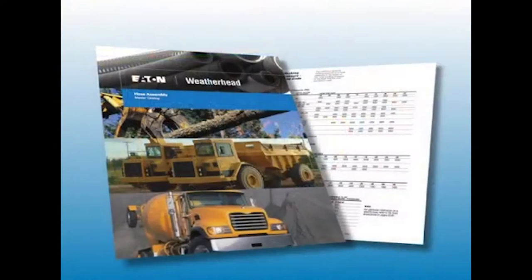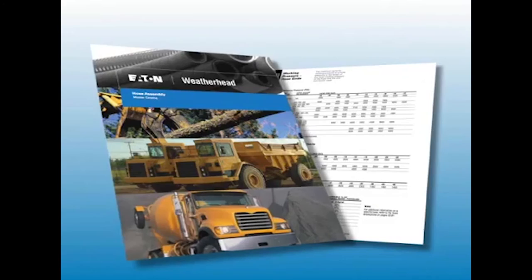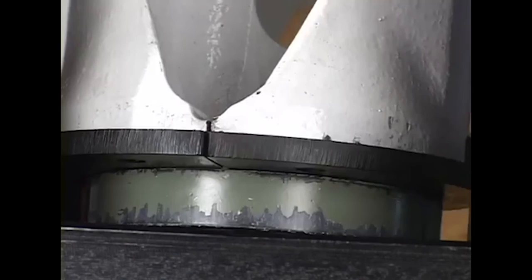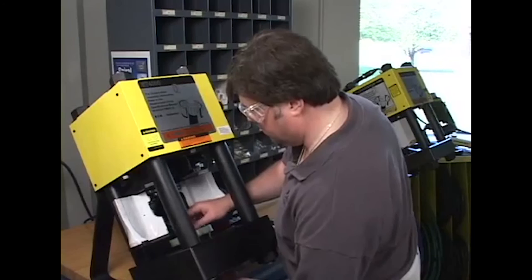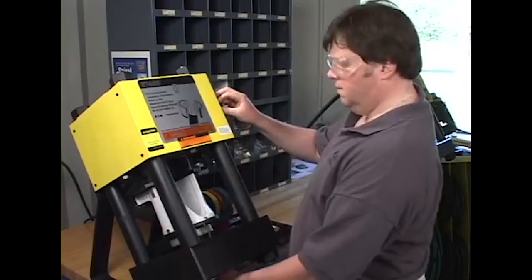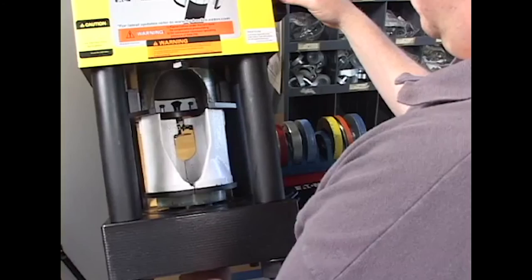If there is a problem or you have any questions, consult the crimping procedures found in the equipment section of the Eaton Weatherhead Master Catalog. Refer to the helpline telephone number located on this video box or contact your Weatherhead supplier or representative. One final reminder, safety should never be compromised under any circumstances. Be sure the unit is properly positioned before using and follow all the normal safety procedures when the machine is being operated.